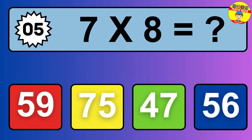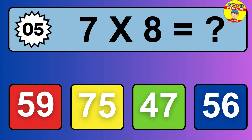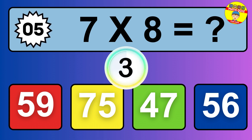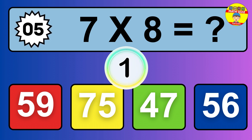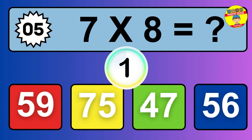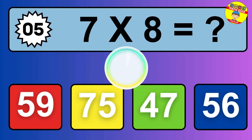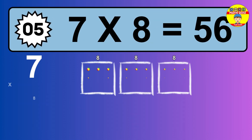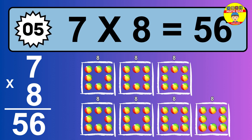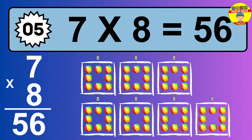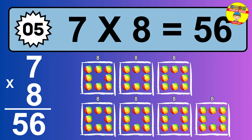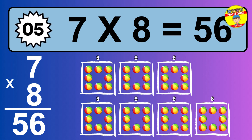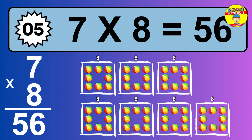Question 5. 7 times 8 equals what? The answer is 7 times 8 is 56. To calculate, we have 7 groups with 8 balls each one. So how many balls do we have? 56 balls.